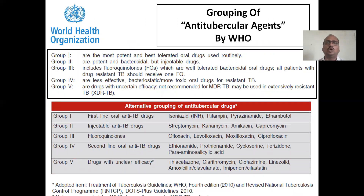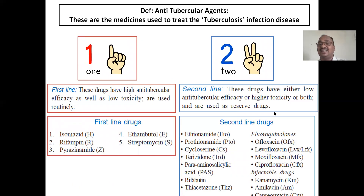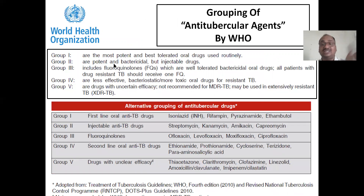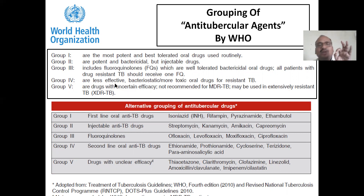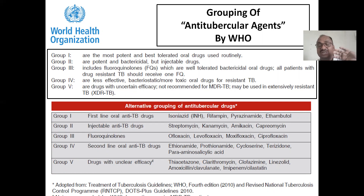WHO also conducted research and grouped anti-tubercular agents into five groups. Group 1: most potent, best tolerated oral drugs used routinely. Group 2: only bactericidal injectables. Group 3: only fluoroquinolones. Group 4: less effective, bacteriostatic, more toxic oral drugs. Group 5: drugs with uncertain efficacy — showing different efficacy in different persons.